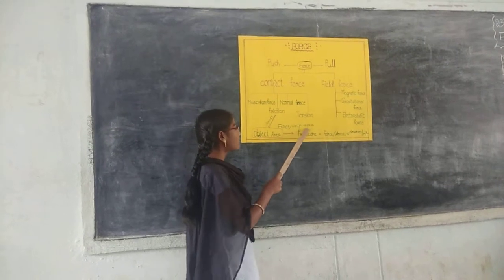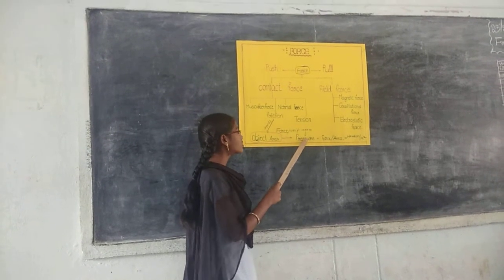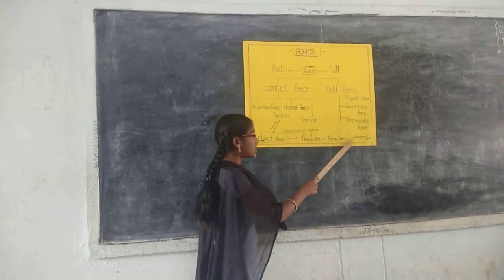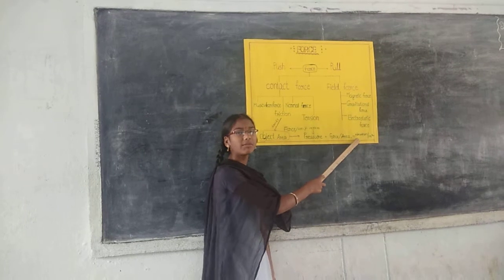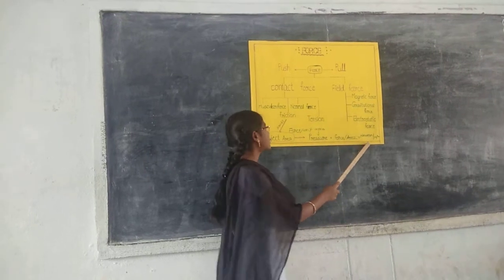Force per unit area is called pressure. Pressure equals force divided by area, equal to newtons per meter squared.